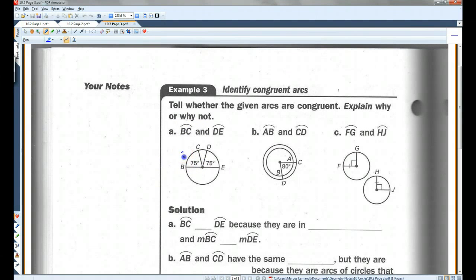BC and DE. This is 75 degrees, which means that this is 75 degrees. This is 75 degrees, so this one also is. So, arc BC and arc DE are congruent because they are in the same circle and the measures of each of these arcs are equal.